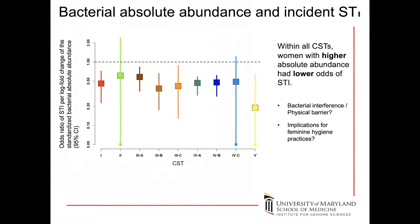Another finding was from pan-bacterial qPCR estimating bacterial absolute abundance of the sample. Within all community state types, women with higher absolute abundance had lower odds of STI. Even in the low-lactobacillus BV-like CST4A and 4B states, women with higher bacterial loads had lower risk for STI compared to those with lower loads — counterintuitive, as we expected higher loads would be worse. This suggested something about bacterial interference or a physical barrier, and might have implications for feminine hygiene practices.